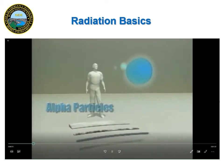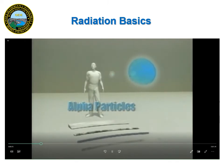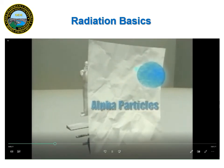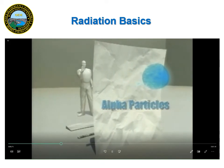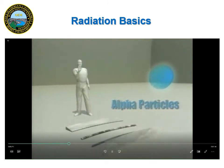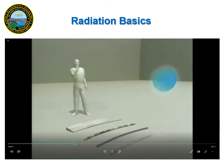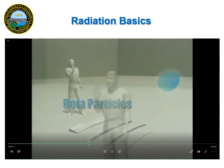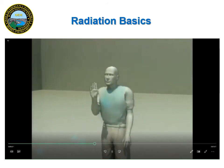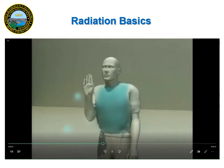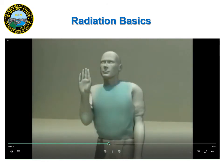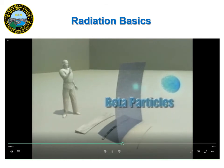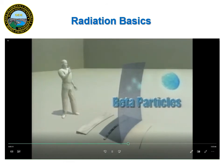Alpha particles may be ejected from the nucleus of an atom during radioactive decay. They are relatively heavy and travel only about an inch in air. They can be easily shielded by a single sheet of paper and cannot even penetrate the outer dead layer of skin, so they pose no danger when their source is outside the human body. Beta particles are essentially electrons emitted from the nucleus of a radioactive atom. They are lighter than alpha particles and can travel farther in air — up to several yards. Very energetic beta particles can penetrate up to half an inch through skin and into the body. They can be shielded with less than an inch of material such as plastic. For lower energy beta particles, the outer layer of clothing can act as an effective shield.